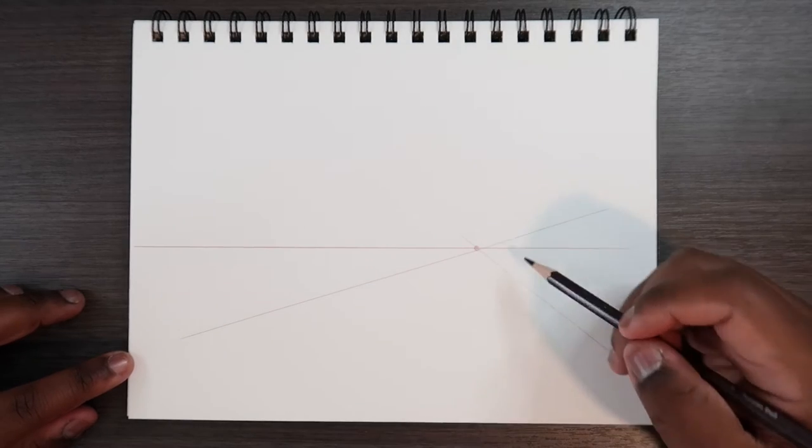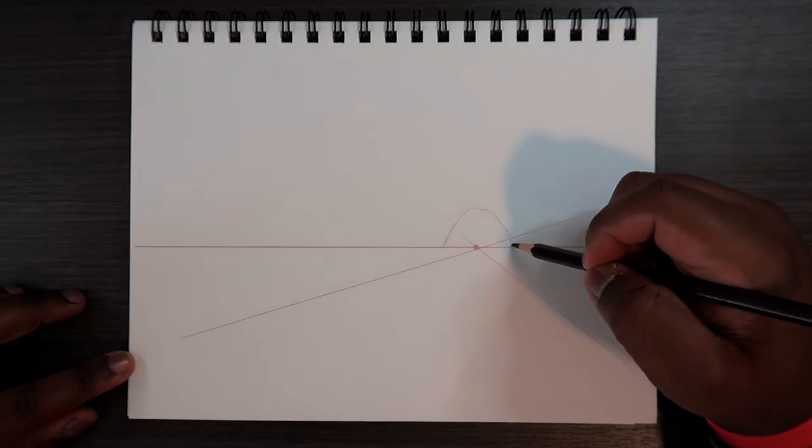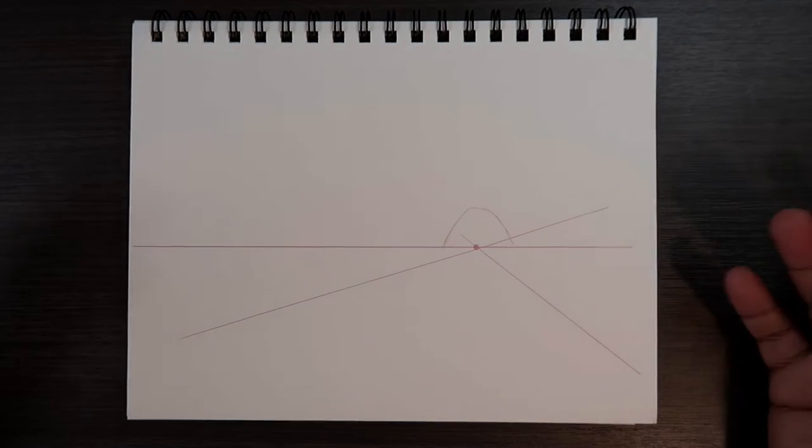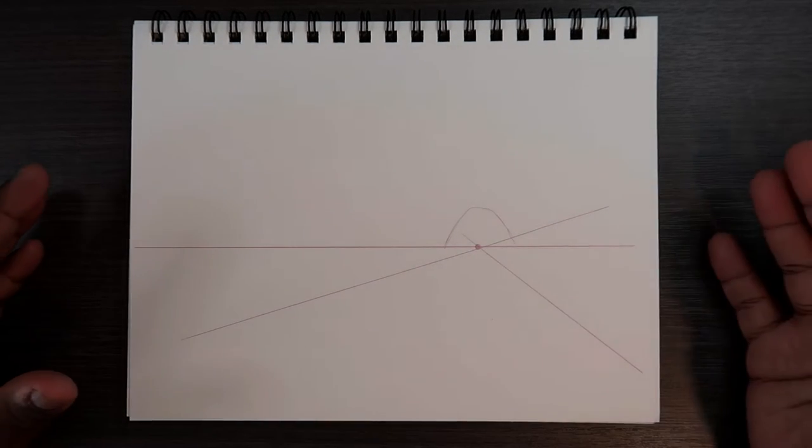Now just above this dot, we're going to draw an arc. So you can make the arc like this big. And it's okay if it's not perfect. It's a cave, so it's created by rocks, mountains, whatever. It's created by nature. It's not man-made.